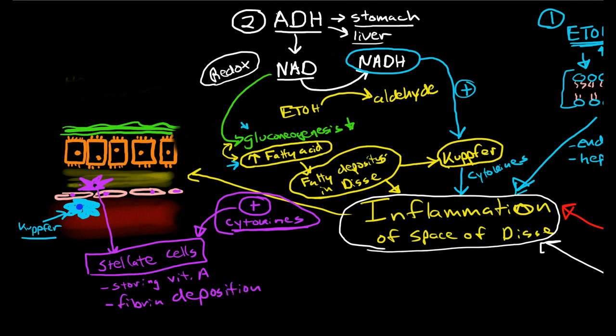But cytokines cause the stellate cells to be transformed from boring vitamin A storing cells to hyperactive fibrin depositing cells. And so we end up with fibrin deposition within the space of Disse. And actually, the stellate cells do even more than just depositing fibrin. And they actually start depositing collagen, fibrin, and proteoglycans, which you will recognize as the components of dense connective tissue. So the stellate cells are stimulated to replace the entire fluid interstitial space of the space of Disse into fibrin scar. So this looks like scar tissue anywhere else in the body.